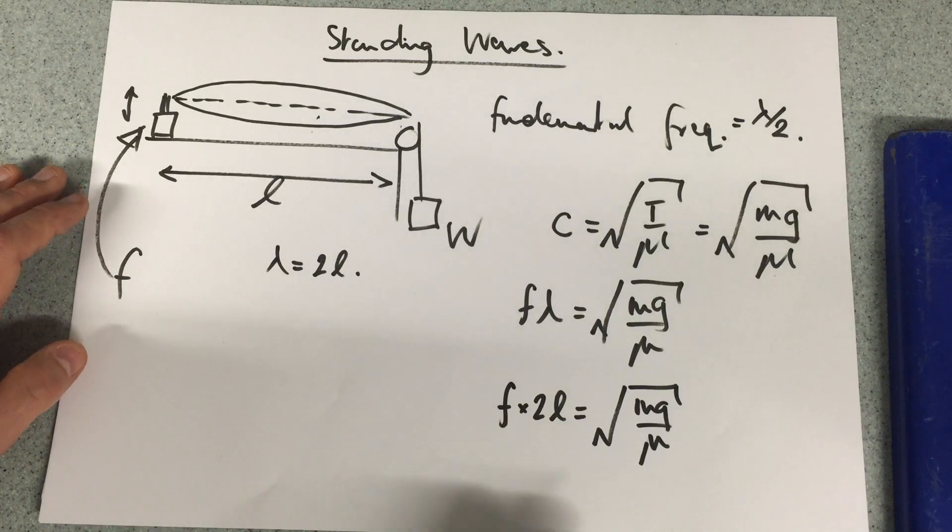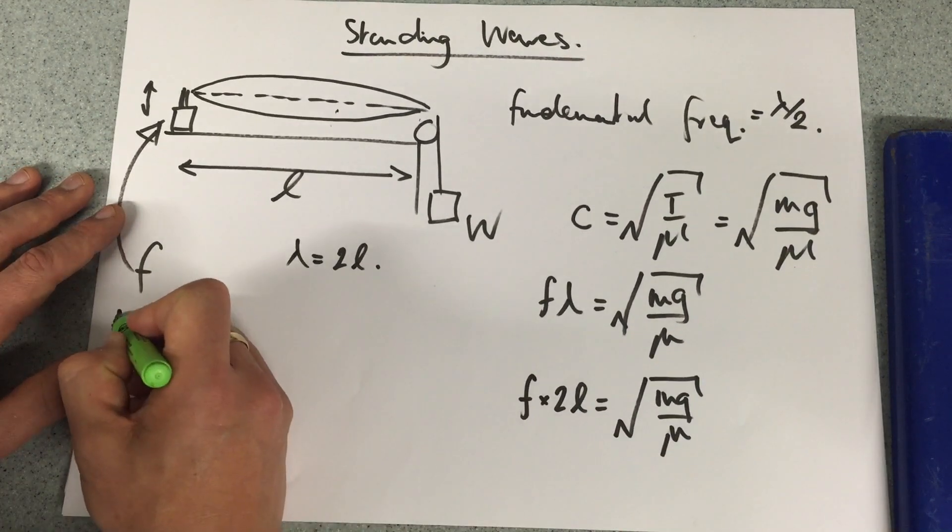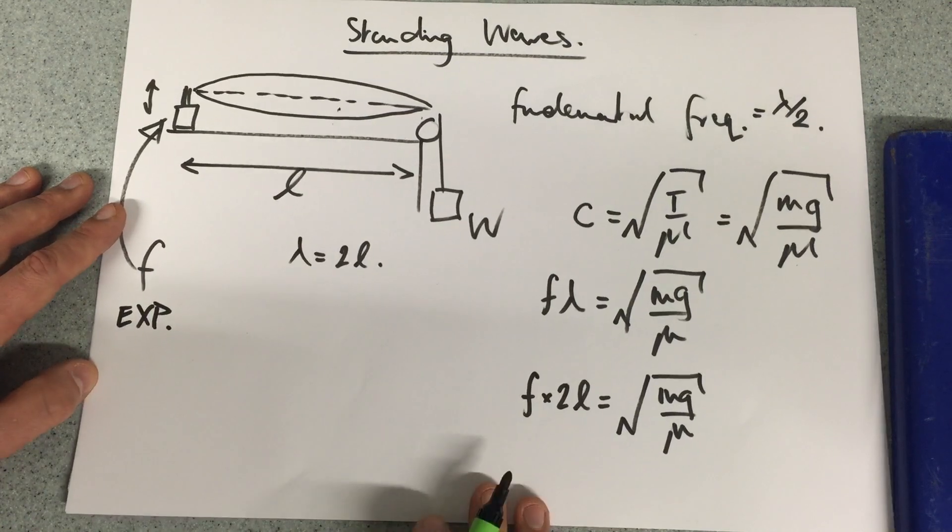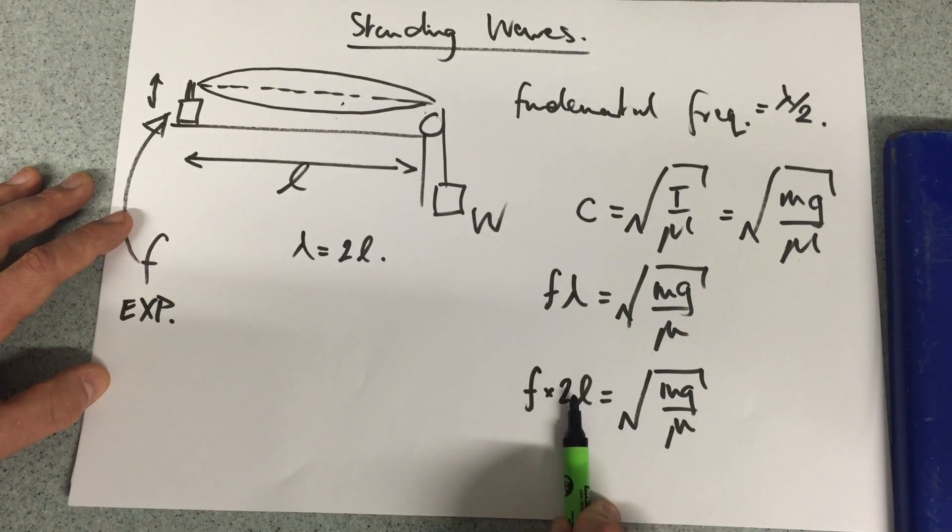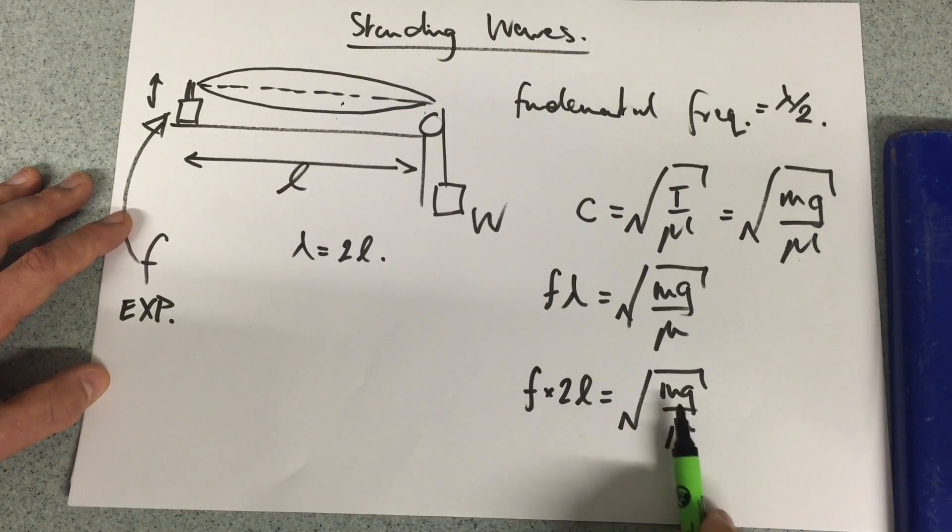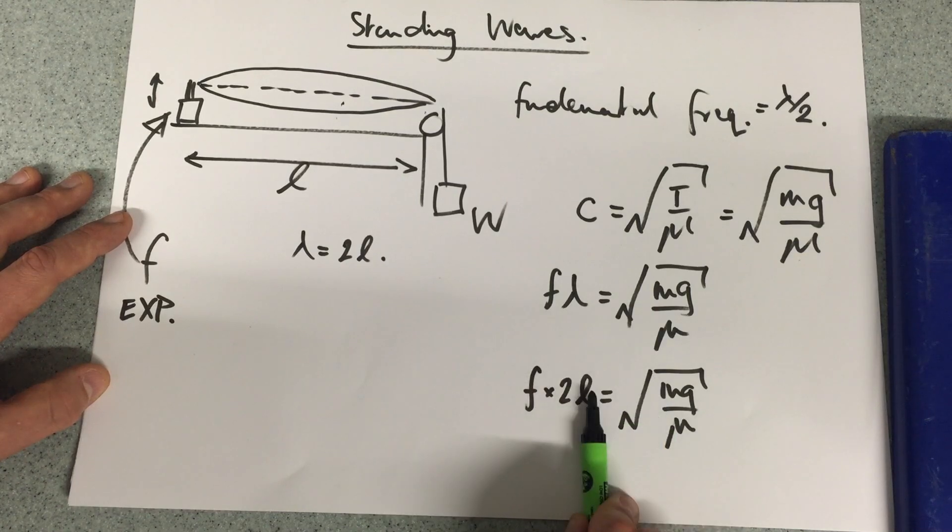Now what are we looking to investigate? There are two experiments that we can run with this. In experiment 1, we can look at how the frequency and the length change and how they interdepend. Or experiment 2, we could look at how the mass and the frequency change for a fixed length.